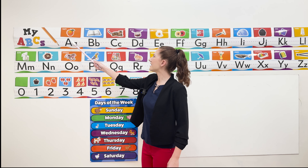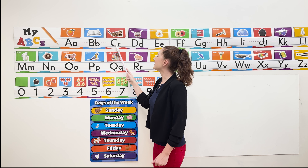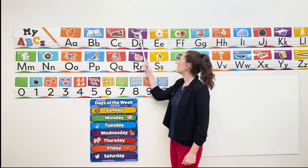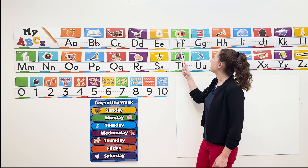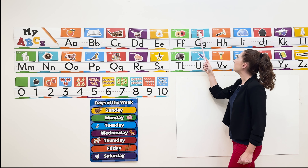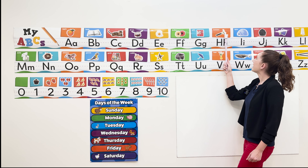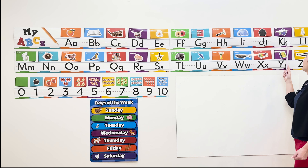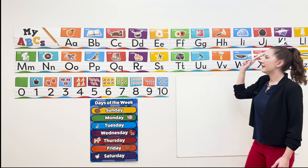A is for Apple, B for Book, C for Cat, and D for Drum, E for Egg, F for Flower, G for Gift, H for Hammer, I for Igloo, J for Jacket, K for Key,